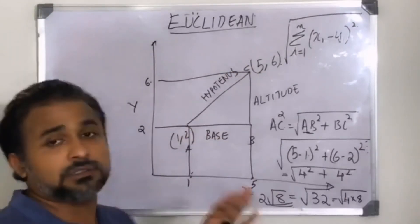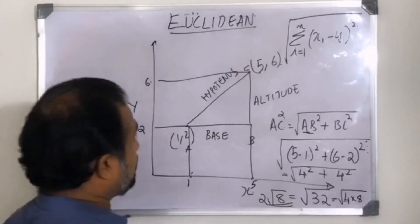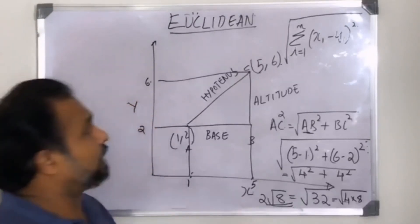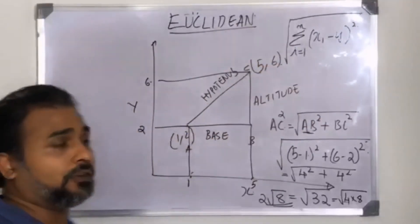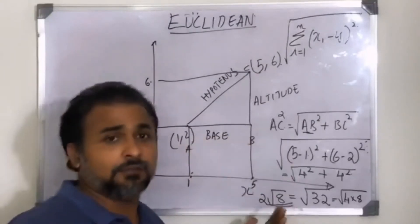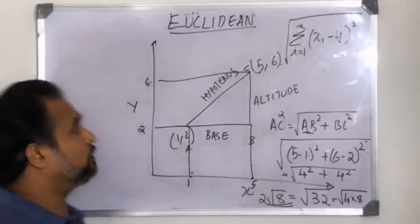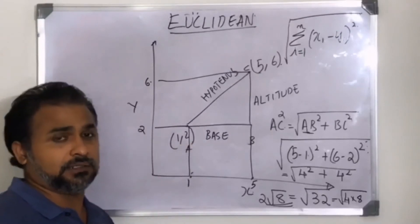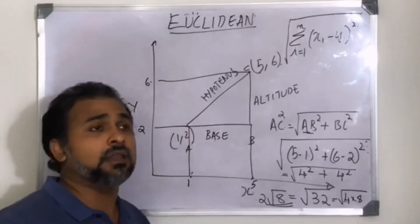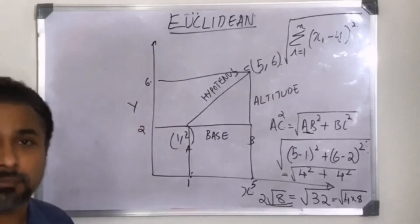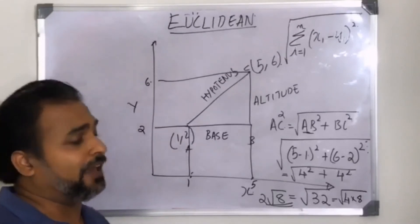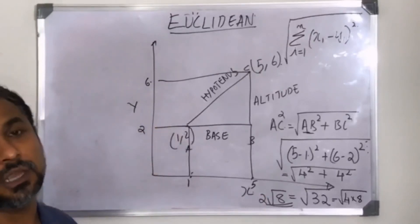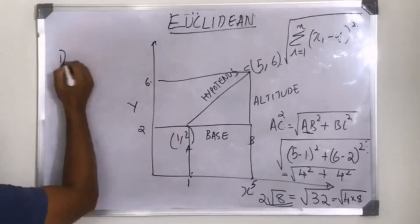Now, where should you use Euclidean distance? Euclidean distance is a squared distance. When your dataset is under attack by outliers, those outliers get squared, which inflates the value significantly. So, when your dataset has outliers, we generally do not prefer Euclidean distance. Also, it cannot handle high dimensions well — generally we prefer it for two or three dimensions, with a thumb rule of fewer than five dimensions.